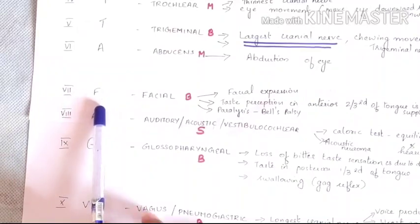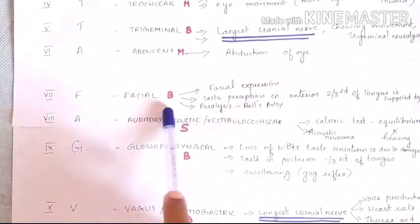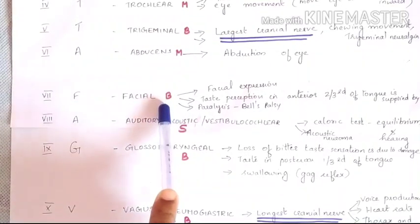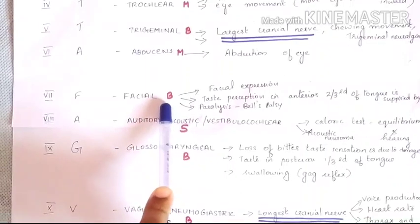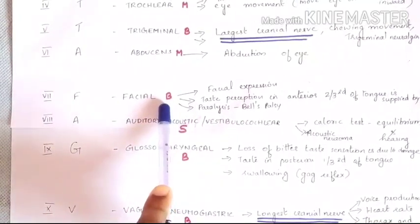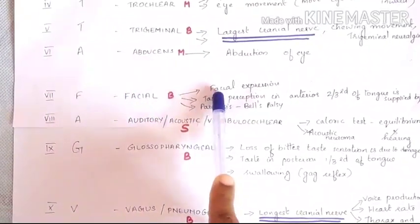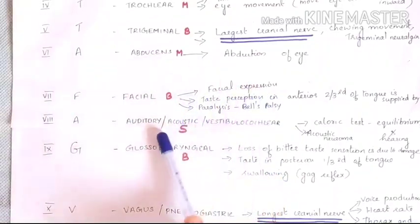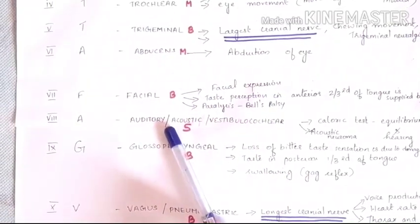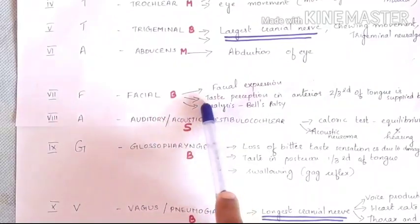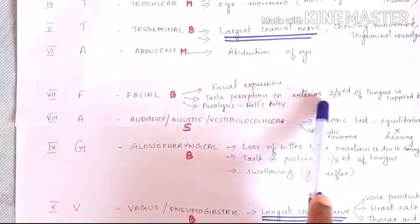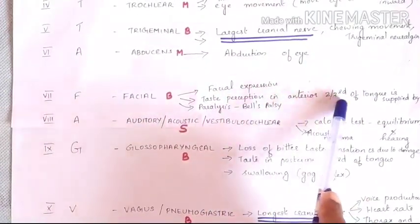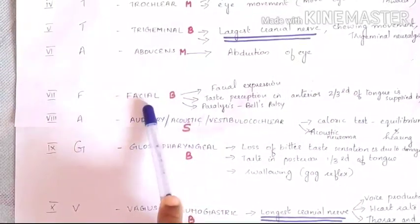The seventh cranial nerve is the facial nerve. It is a mixed nerve with both motor and sensory functions. Its motor function helps in facial expression and movement. Its sensory function is taste perception in the anterior two-thirds of the tongue.